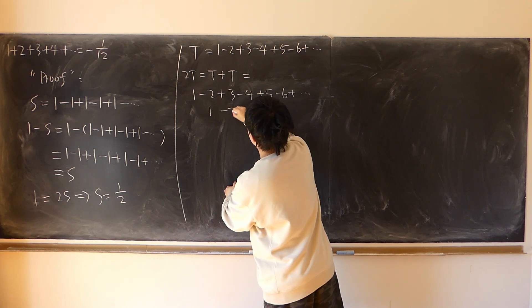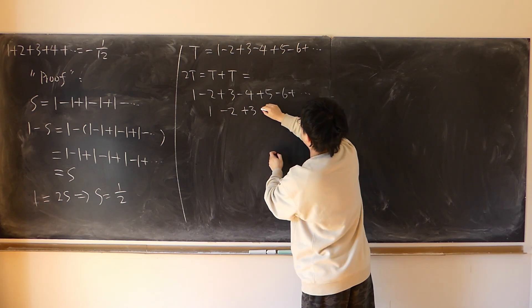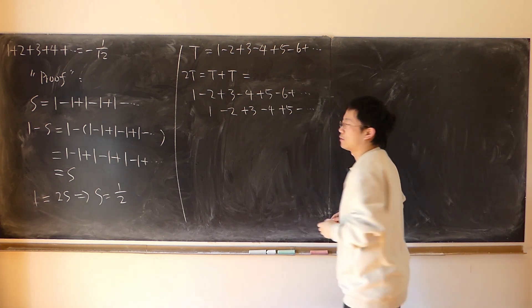So plus 1, copy down 1, minus 2, copy down plus 3, copy down minus 4, plus 5, copy down minus 5, so on and so forth.